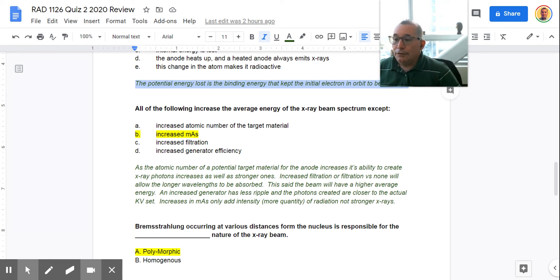All of the following increase the average energy of the x-ray beam. So we're talking about the beam getting harder. So the answer here is increased mass is the exception. As the atomic number of a potential target material for the anode increases, its ability to create x-ray photons increases as well, which is why we've learned that suitable targets are metals that have high atomic number. However, they also require high melting points, which is not discussed in this particular question.